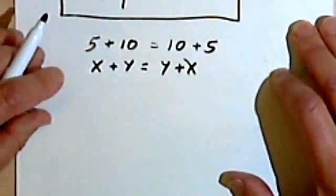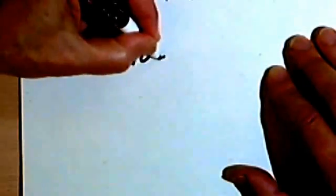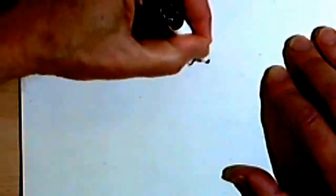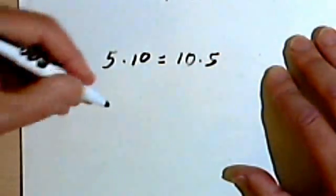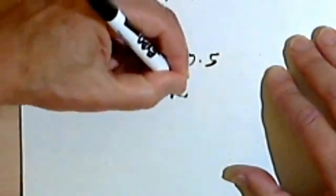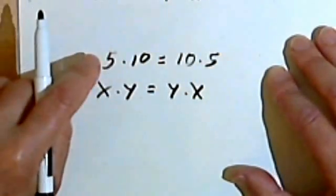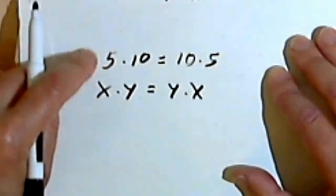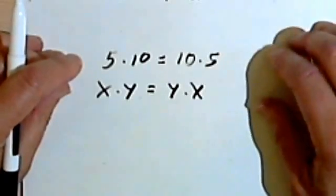We've also got a commutative property of multiplication. And all that says is if we have two numbers, let's use 5 and 10 again, we can say 5 times 10, or we can say 10 times 5, and we'll get the same result either way. And if we have variables, we can say x times y, or we can say y times x. Once again, all that's happening is the numbers or the variables are moving, they're changing places, and so they're commuting. And this becomes the commutative property.